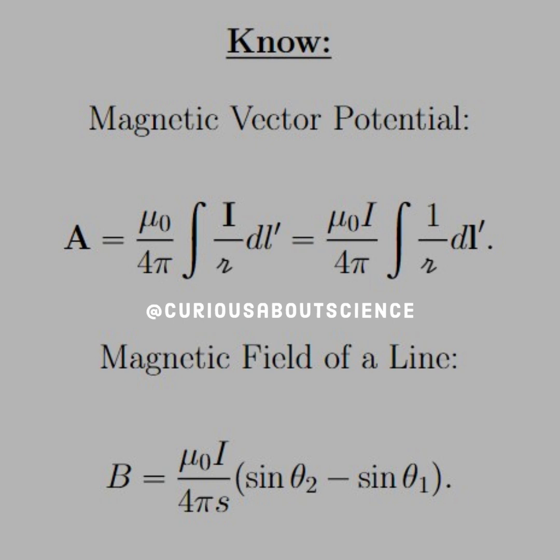The magnetic field of a line was B equals mu-naught I over 4 pi s times sine theta 2 minus sine theta 1.